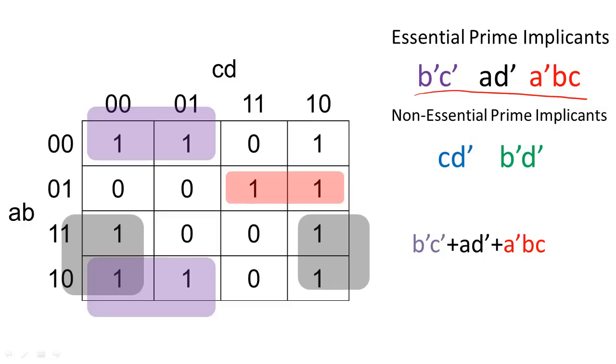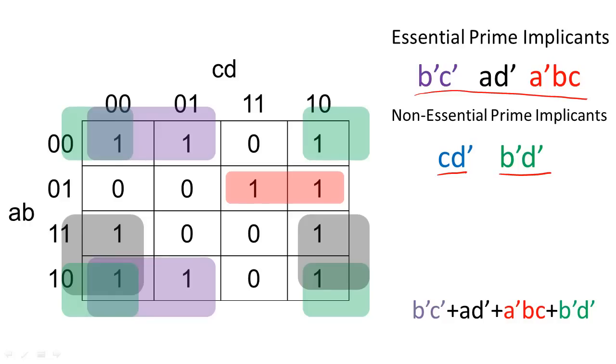Then, we must choose from the non-essential prime implicants to create an expression that uses a minimum number of product terms. In this case, we can create two minimal expressions that have the same number of product terms. The lower expression has one fewer literals, so it is technically the true minimal expression. But, either expression would probably be acceptable in practice.